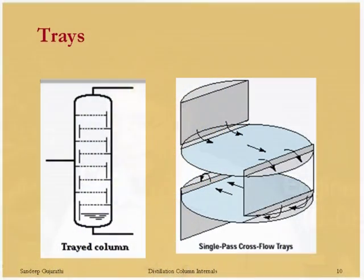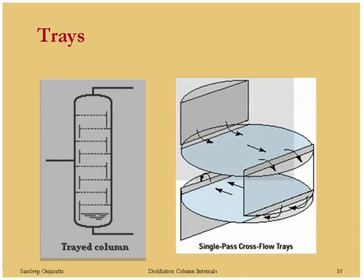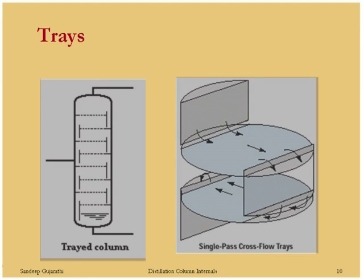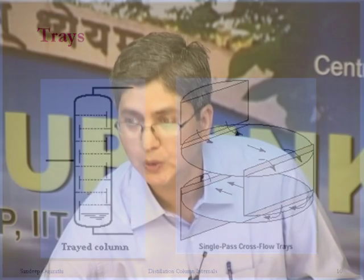In a tray column, this picture shows a single-pass cross-flow tray. From the downcomer of the tray above, liquid enters onto the tray, flows across it, and goes to the next downcomer to feed the tray below. Vapor flows from the bottom of the tray to the next tray on top — that is why it is called a cross-flow tray. The desired flow path is liquid flowing across the tray while vapor rises from below and exits to the tray above.